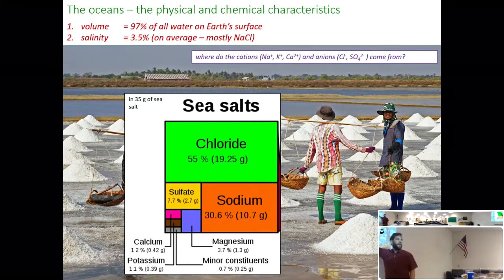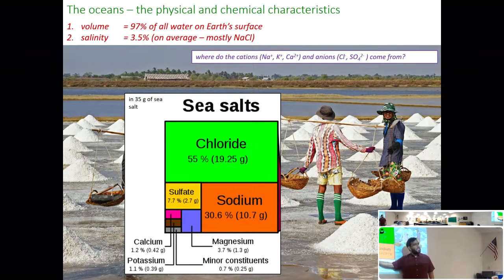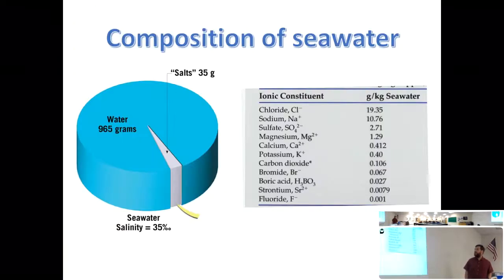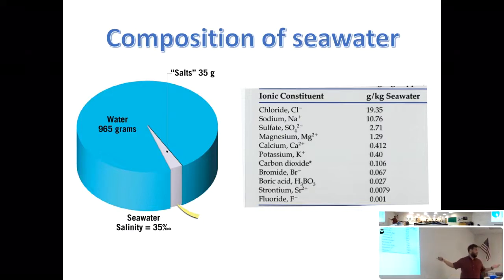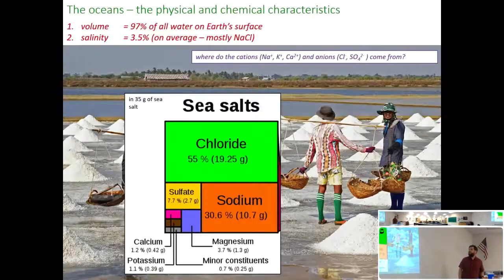This pie chart shows the breakdown of sea salt: it's mostly sodium chloride, then sulfate, magnesium, calcium, potassium, and everything else — carbon dioxide, strontium, boric acid, fluoride, iron, silicon — is in a very tiny fraction. Silicon is very common in the crust, yet there's almost none dissolved in seawater.